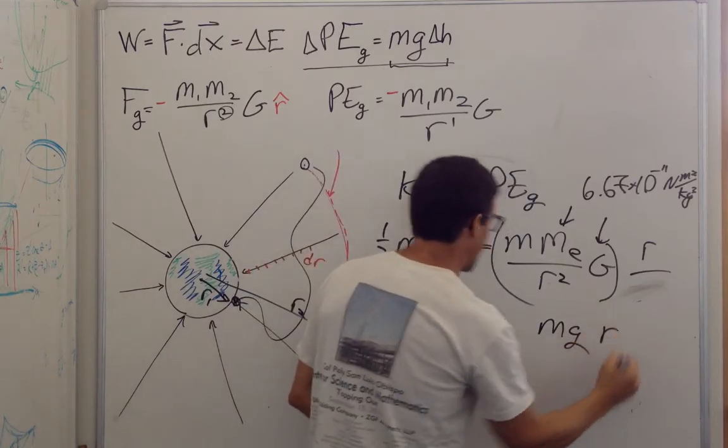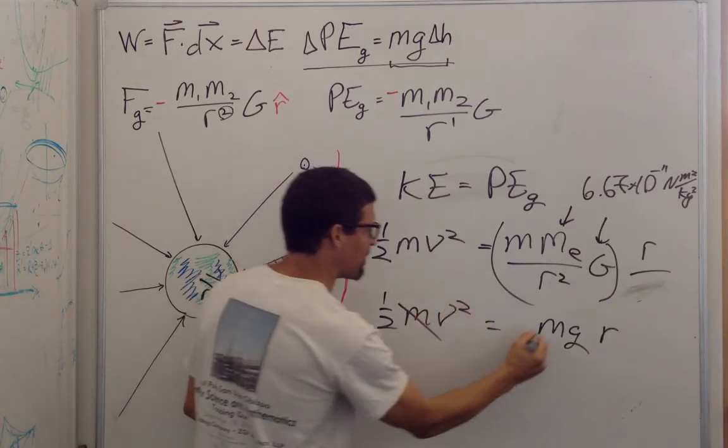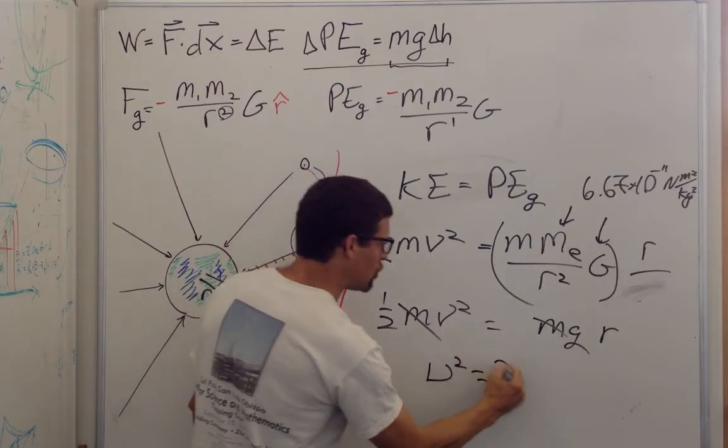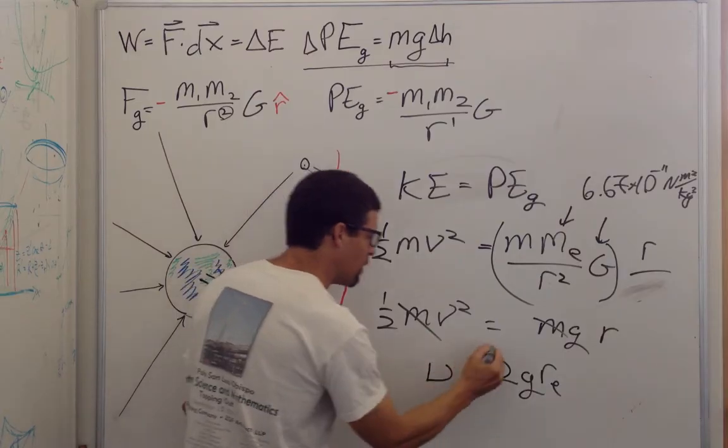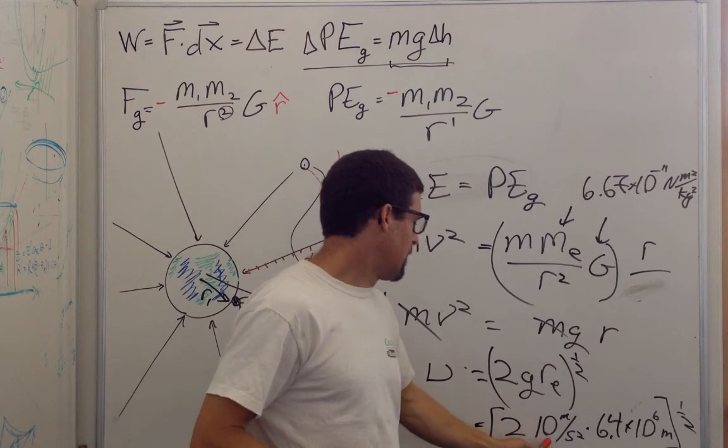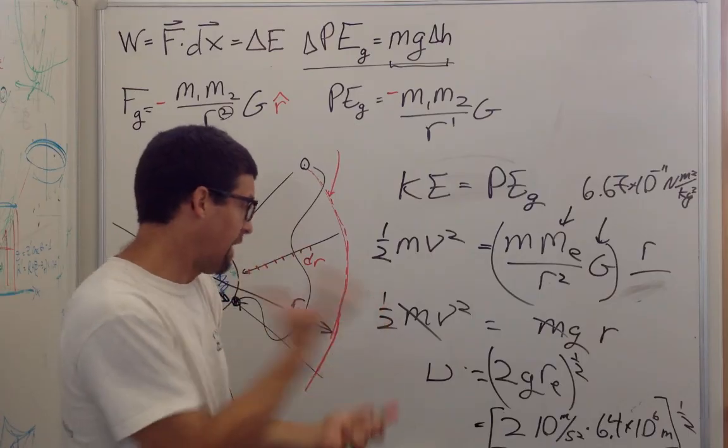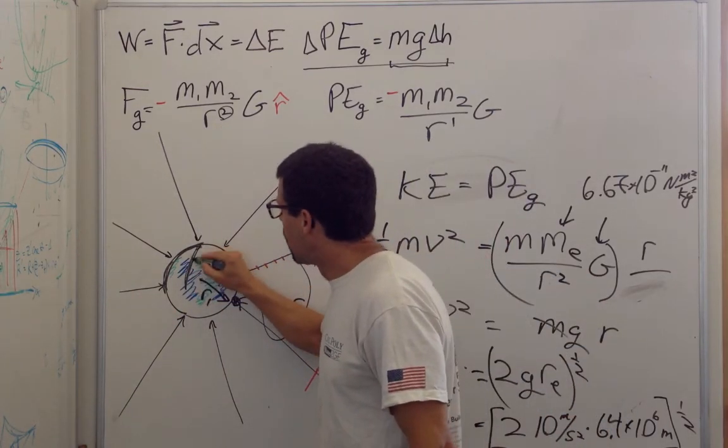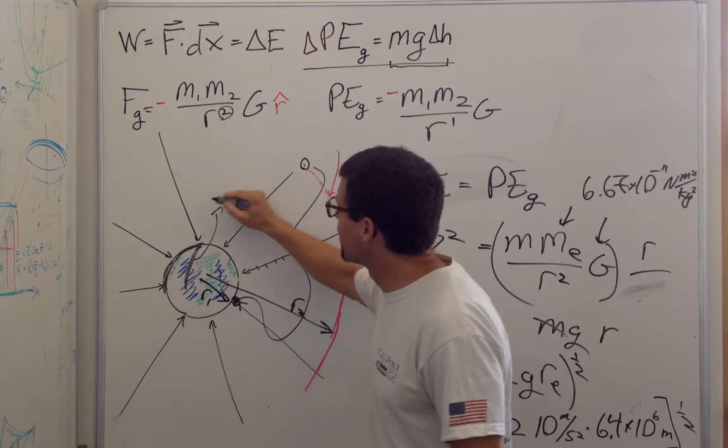Then this is r, I bring the r down, and I can say one-half mv squared is equal to mg. These cancel, and now I've got v squared is equal to 2g times the radius of the Earth, or v is equal to the square root of this. So this is 2 times about 10 meters per second squared times the radius of the Earth. How do I remember the radius of the Earth? That's a hard number to remember.